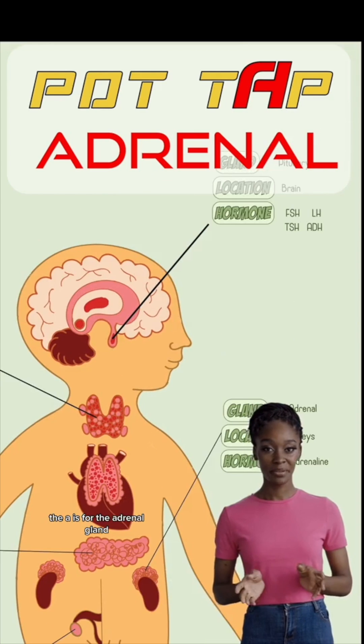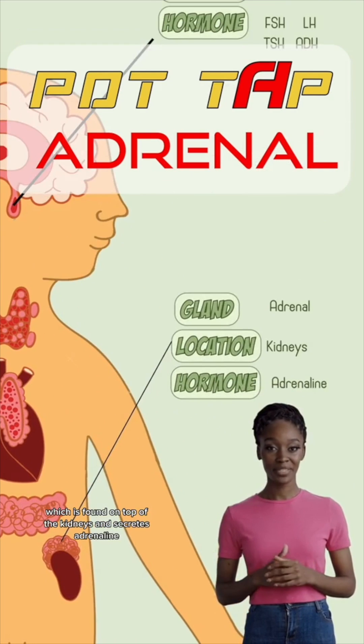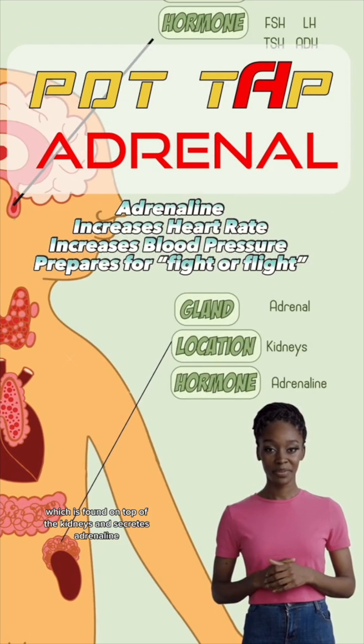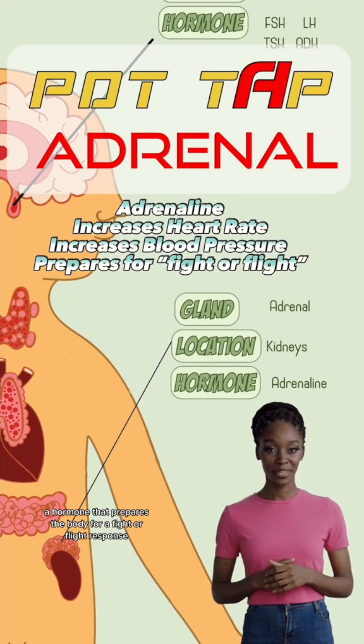The A is for the adrenal gland, which is found on top of the kidneys, and secretes adrenaline, a hormone that prepares the body for a fight or flight response.